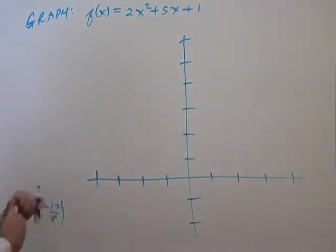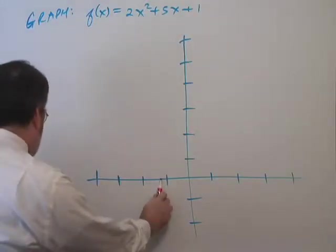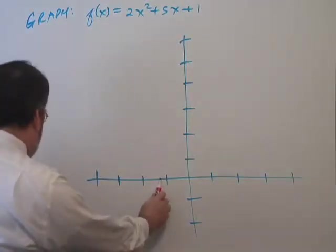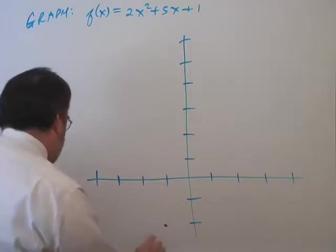Negative 5 fourths is negative 1 and 1 fourth, so it's about here. And negative 17 eighths is about minus 2 and 1 eighths, so it's right about here. So here's our vertex.